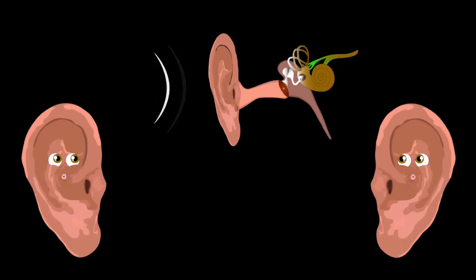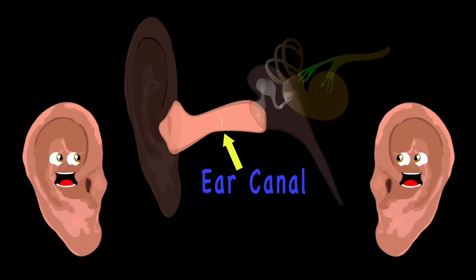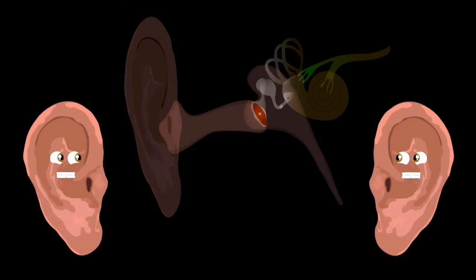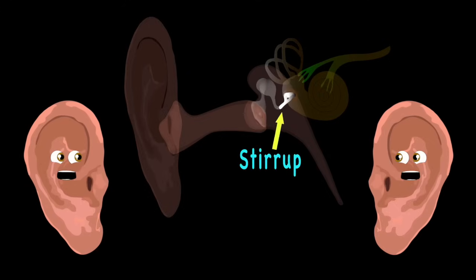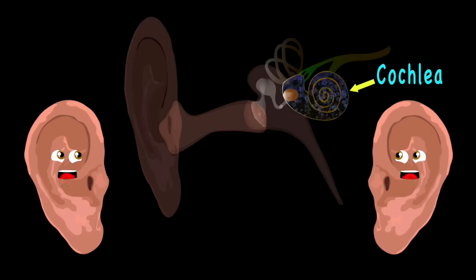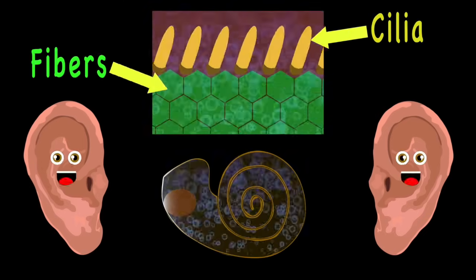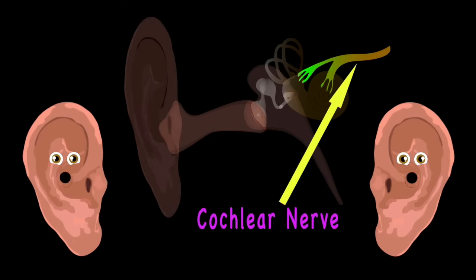When sound waves are made, the pinna gathers them up and sends them through the ear canal to the eardrum. Then your eardrum vibrates and strikes the hammer bone, which moves the anvil and the stirrup, making all that sound grow. The stirrup vibrates the liquid that fills your cochlea. The liquid moves all sorts of fibers, which vibrate more cilia. That cilia creates electric impulses that shoot through the cochlear nerve to the brain.